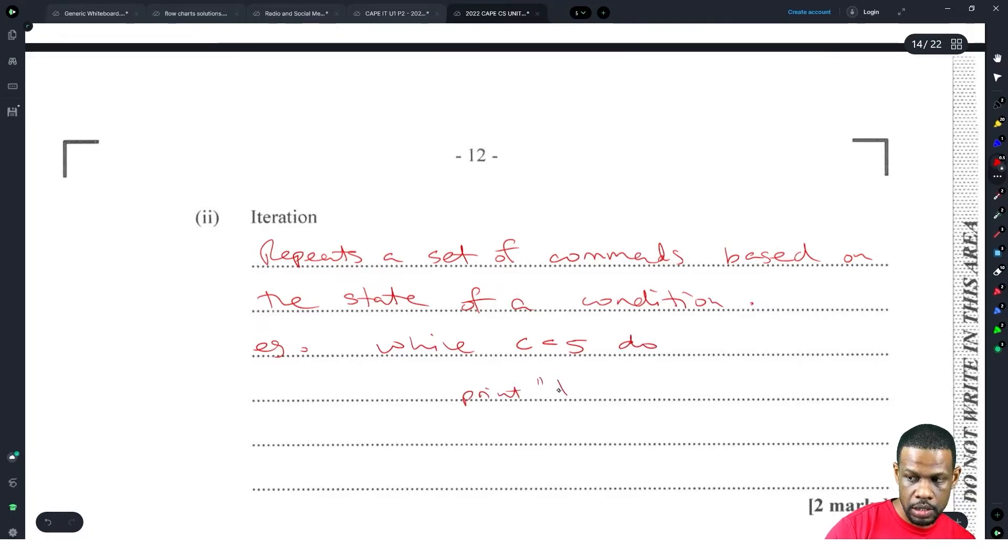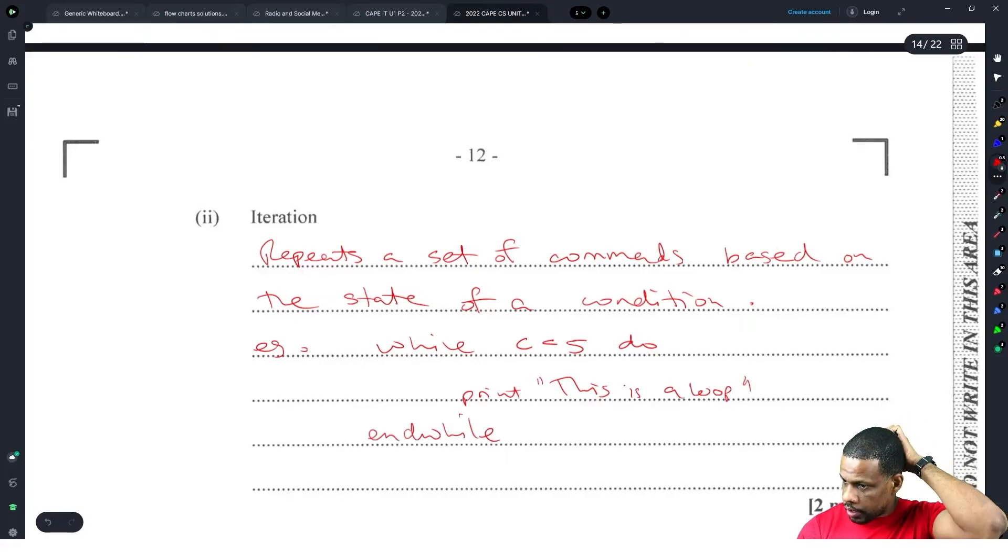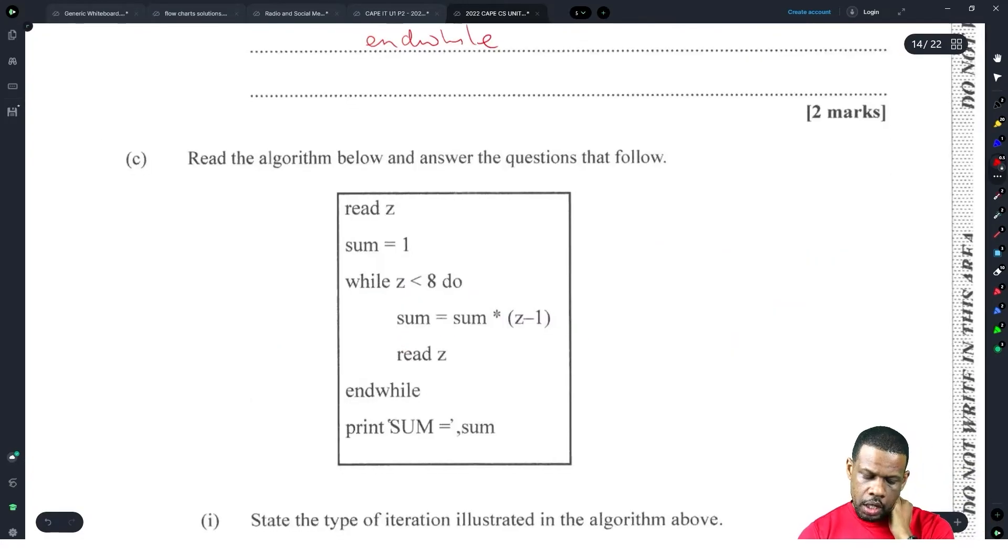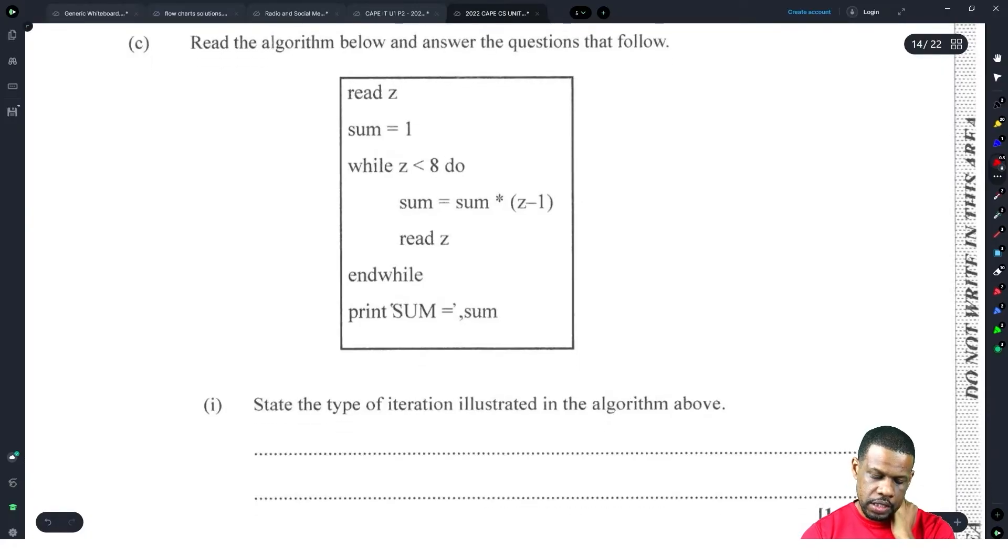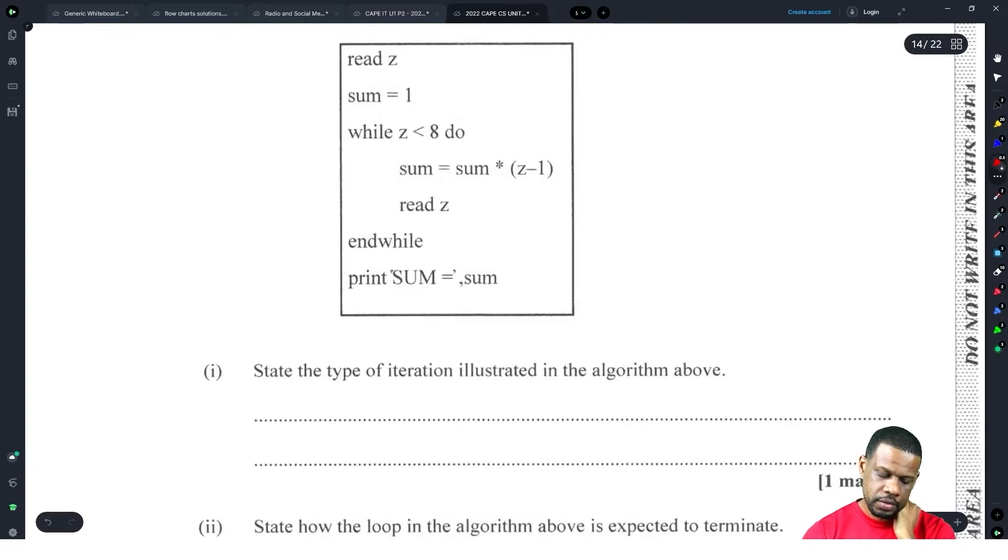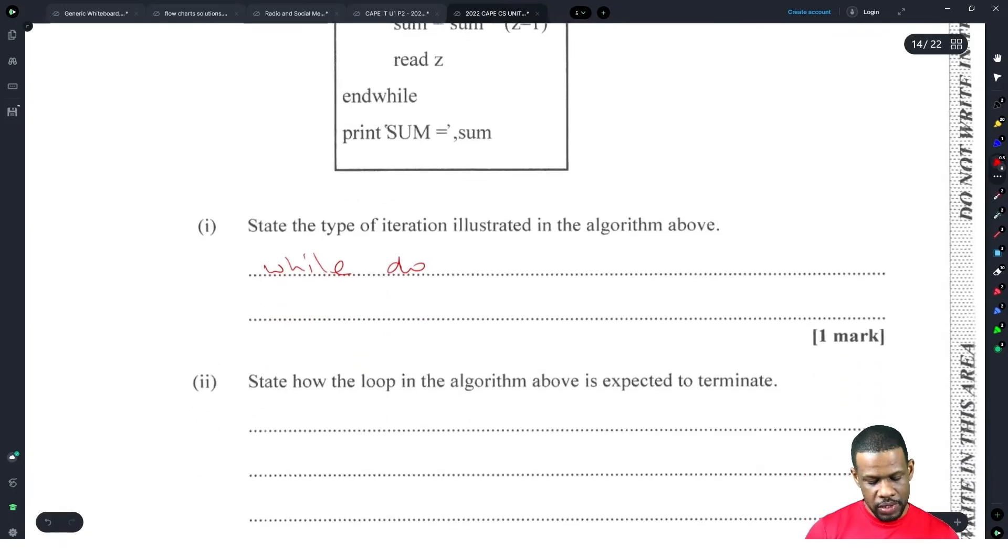Iteration repeats a set of commands based on the state of a condition. Example: while C is less than five, do print. This is a loop. Alright, that's two marks there.